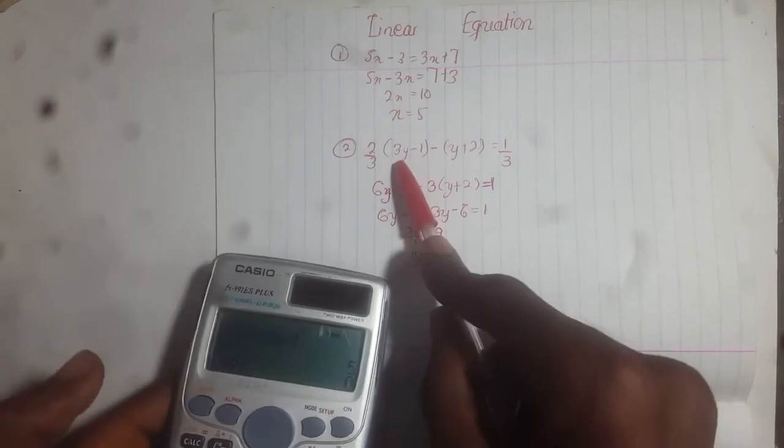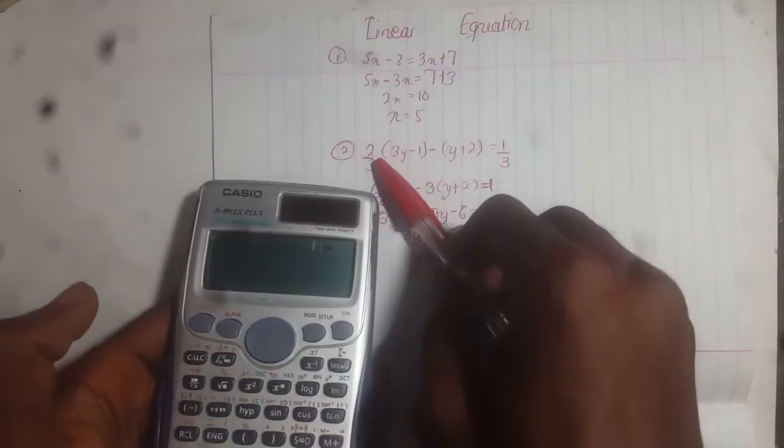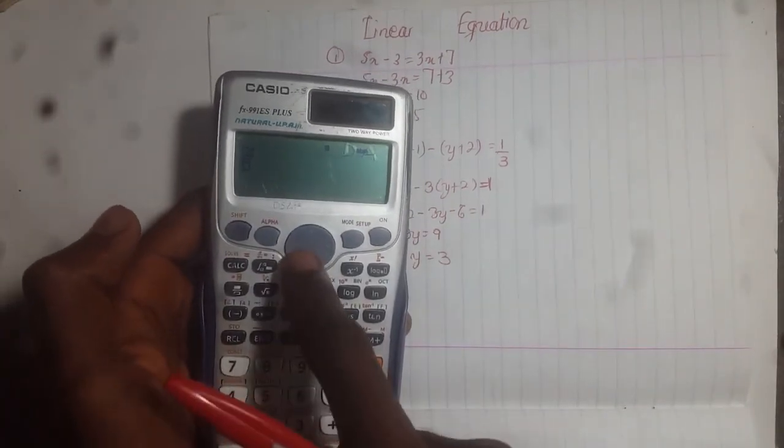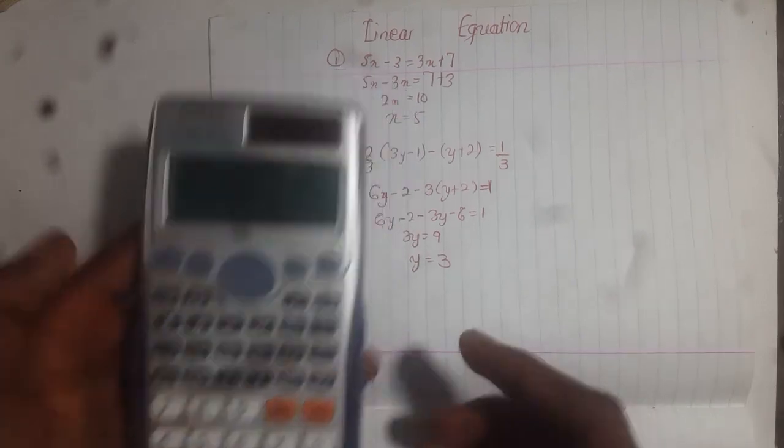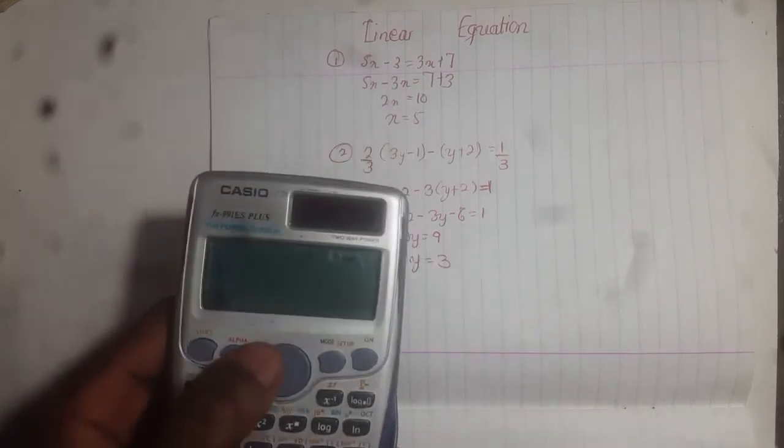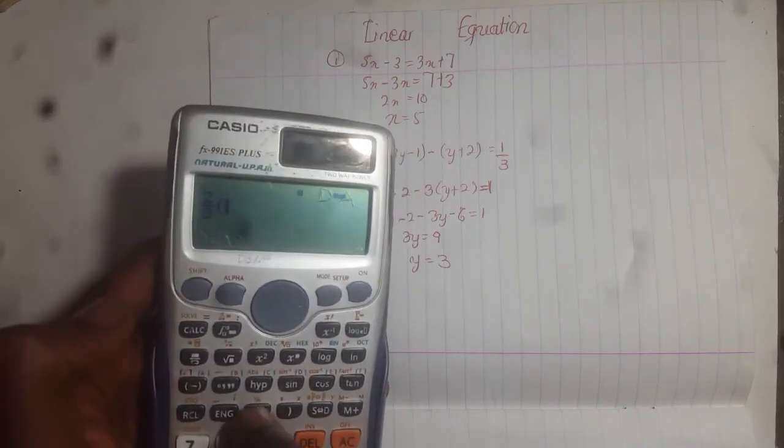Now let's look at the second question. This is a little complicated, but we can work it out. So the same approach. You can see 2 over 3, so you press 2 on 3. Then open bracket.